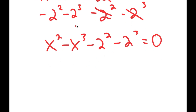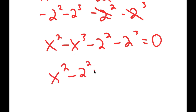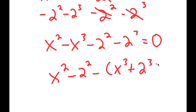Now, I'm going to group all the powers of 3 and the powers of 2 together. So I get x squared minus 2 squared minus x to the power of 3 plus 2 to the power of 3 is equal to 0.